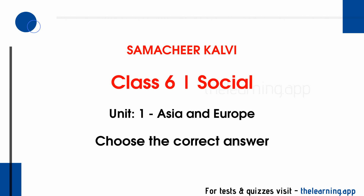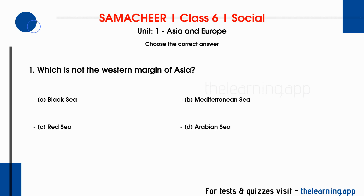Choose the correct answer. Question 1: Which is not the western margin of Asia? Options are: A. Black Sea, B. Mediterranean Sea, C. Red Sea, D. Arabian Sea. Correct answer is D, Arabian Sea.